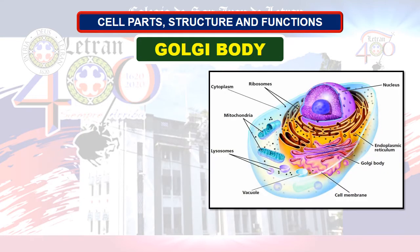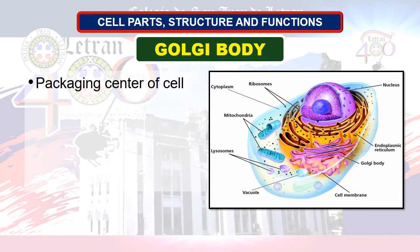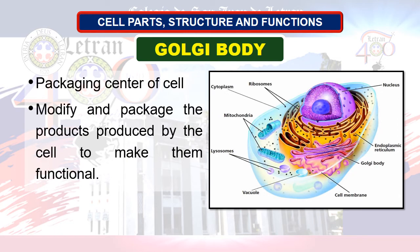Next in line: Golgi body. The Golgi body is the packaging center of the cell. It consists of a system of membrane-enclosed vesicles arranged parallel to each other. The Golgi body is involved in the secretion of several chemical products, membrane repair, and transport of materials in and out of the cell. It modifies and packages products to make them functional.